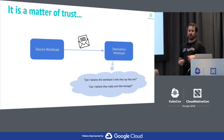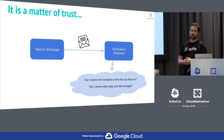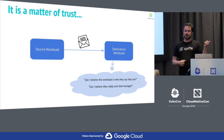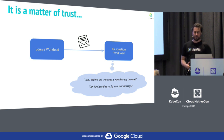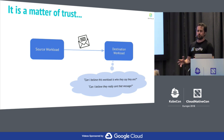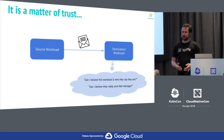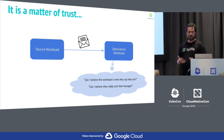What I mean by trust is: if I'm a source workload trying to talk to a destination workload, can I as a destination workload trust that something talking to me is in fact who it says it is, and that the messages it's sending me actually came from that original source? Trust is not a new problem — if you've ever used a password or a shared secret or a shared token, then you've participated in establishing trust.